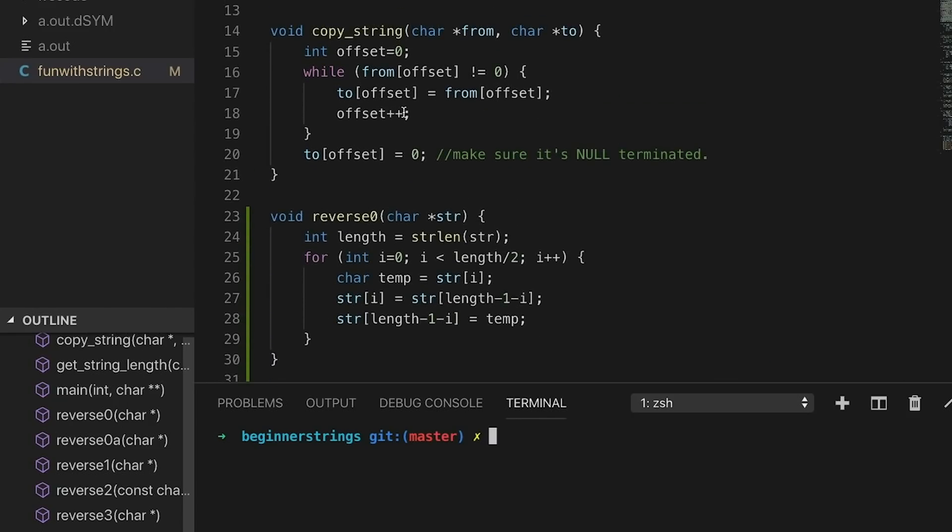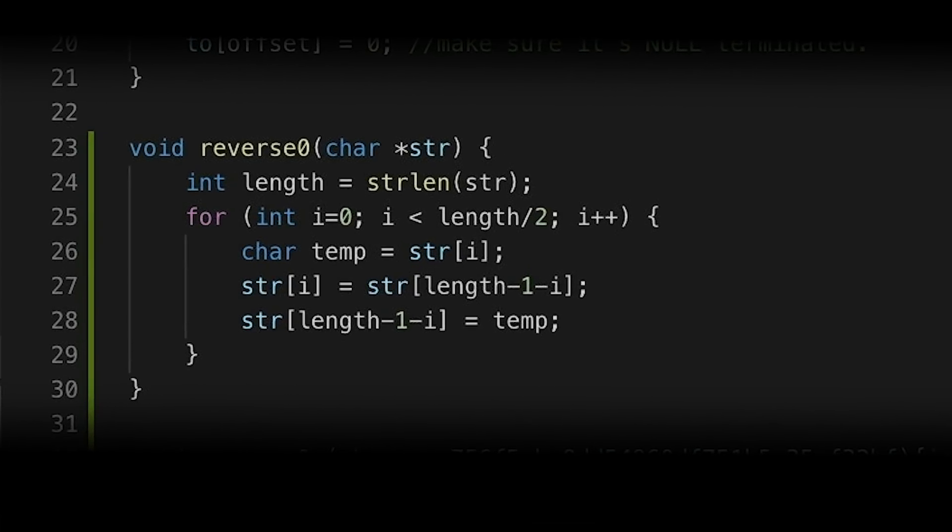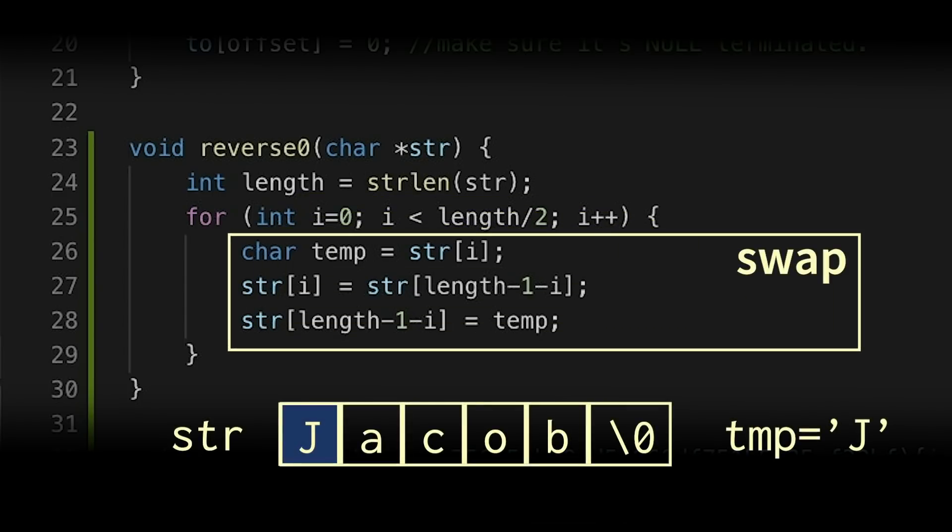Okay, so let's start out with implementation number zero. This is the first one that came to my mind. I find the length of the string, then I go from position zero to position length divided by two. And at each position, I swap the character at that position with the mirror position on the other side. Note that I use a temporary variable here to save one of the characters. Otherwise, one of those characters is going to get destroyed during the swap.